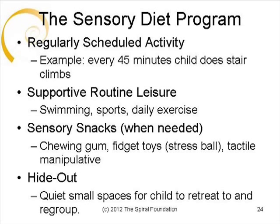Regularly scheduled activities are activities built into the child's routine to allow structured opportunities for movement throughout the day. An example may include climbing a flight of stairs every 45 minutes. Routine supportive leisure activities are activities that the child may participate in once a week or sporadically, such as swimming, sports, or daily exercise. Sensory snacks are sensory tools for the child to use as needed throughout their day to help with self-regulation, such as chewing gum, fidget toys, or a tactile manipulative like Velcro on the underside of a desk. Hideouts are quiet, small spaces for the child to retreat to and regroup when needed, such as a clubhouse area in a bedroom, closet, or hiding under the table.